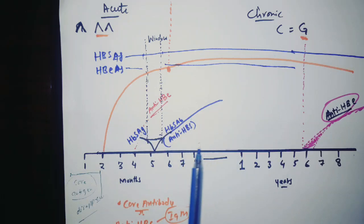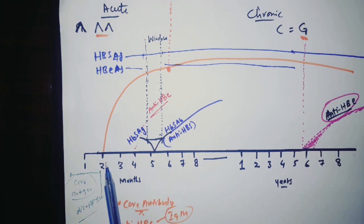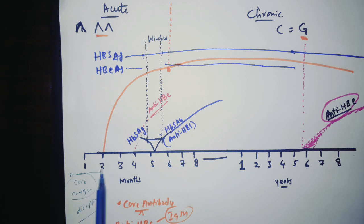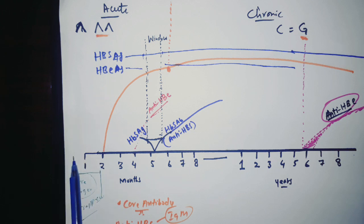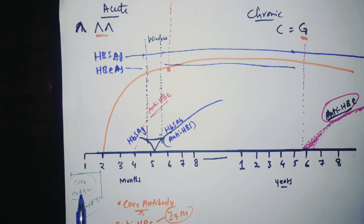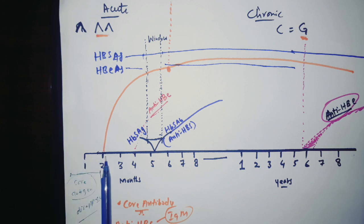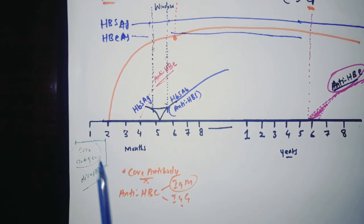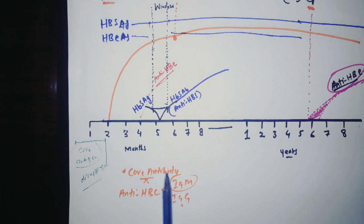This is the graphical presentation of Hepatitis B serological markers, with months and years on the x-axis. Antigens appear before the signs and symptoms or before antibodies. Up to two months is the incubation period where antigens are produced. The core antigen is also produced in the incubation period, but at the second month antibodies against the core antigen begin to appear and the core antigen disappears.